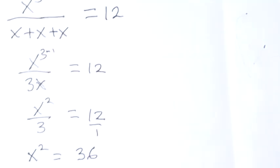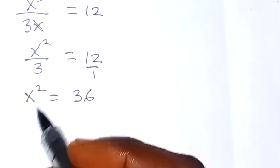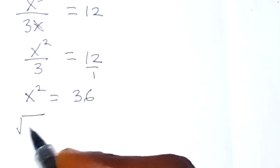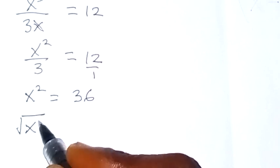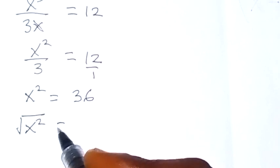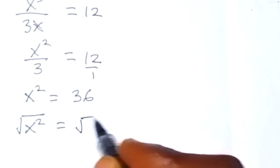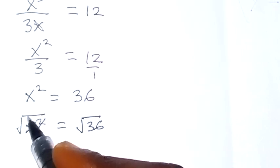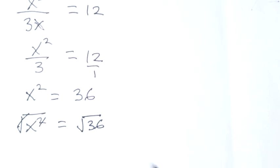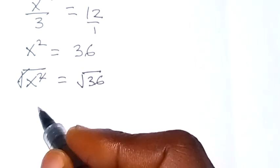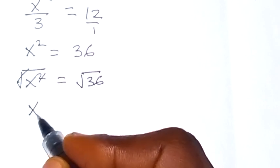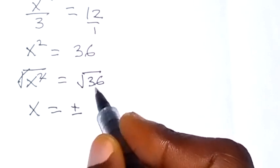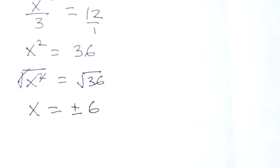And since we are finding the value of x, we can take the square root on both sides. So square root of x squared equals to square root of 36. The square root and square cancel, giving us x equals to plus or minus 6.